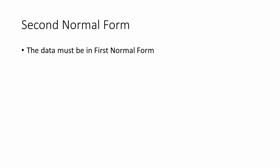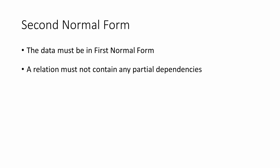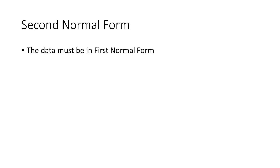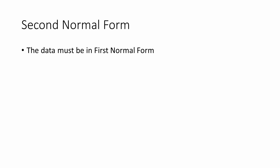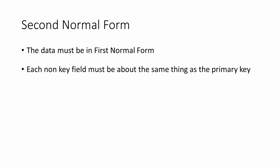To summarise, in technical terms, in order for a table to be in second normal form: the data must already be in first normal form, and a relation must not contain any partial dependencies. In simpler terms, the data must be in first normal form, each non-key field must be about the same thing as the primary key, and each table must contain data about only one type of entity. You can see how important it is to know what the data means in order to make these decisions.